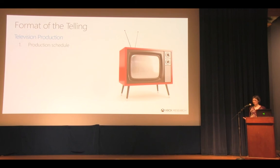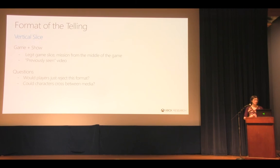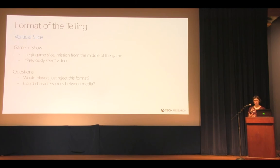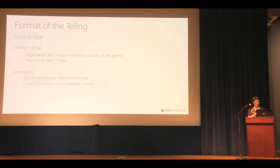The question was: how do you test something early enough to say 'this is a good idea, we should continue spending money on it'? Our answer was a twist on the vertical slice. We did the traditional vertical slice of missions in the middle of the game, but we also added an element of the show. Rather than a complete episode, we built a 'previously seen on' video — a sizzle reel of the plot — and then had people play some game and watch the sizzle.